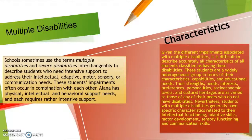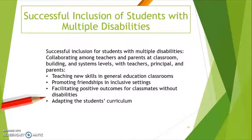Multiple disabilities — some schools call it severe disabilities. You have to adapt your classroom to meet these needs. It's difficult to describe because there are so many different characteristics across disabilities. Basically, you have to use your specific knowledge and cater to characteristics related to intellectual functions and adaptive skills, motor development, sensory functions, and communication skills. Successful inclusion includes teaching new skills in general education classrooms, promoting friendships in inclusion settings, facilitating positive outcomes for classmates without disabilities, and adapting the student's curriculum.